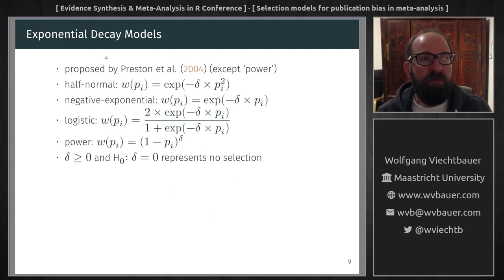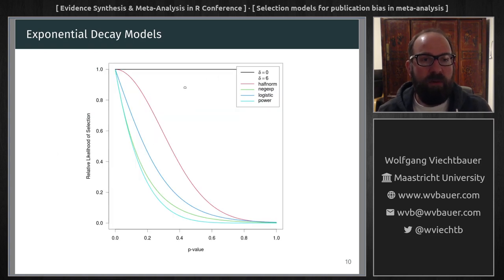Now, another group of models of this type are these exponential decay models that were described by Preston and colleagues. So here, the relative likelihood of selection is an exponential function of the p-value. And so this is what it can look like. These are one-parameter models. So here, when this parameter is equal to zero, then again, we get a flat function. And for other values of this parameter, this is what this selection function can look like.